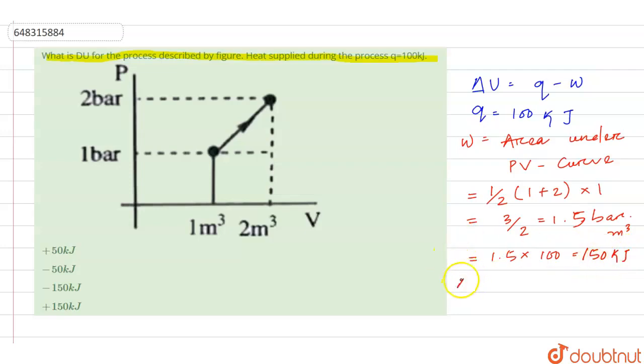Now Q is already given, so what will be ΔU? ΔU will be Q, that is 100 kilojoules, minus 150, which equals minus 50 kilojoules. Hence from these given options, option 2 will be the correct one.